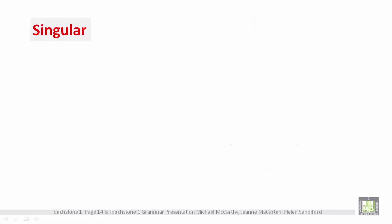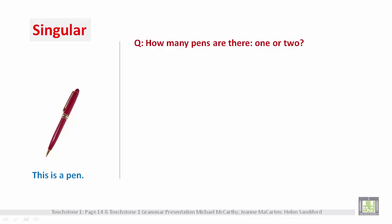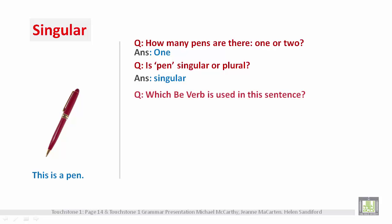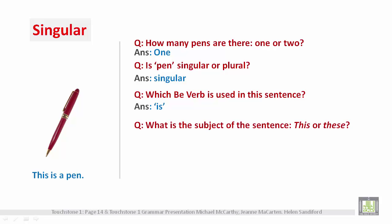Singular example — 'This is a pen.' How many pens are there? One or two? Answer: one. Is 'pen' singular or plural? Singular. Which be verb is used in this sentence? Is. What is the subject of the sentence — 'this' or 'these'? This. 'This' is used with a singular noun.